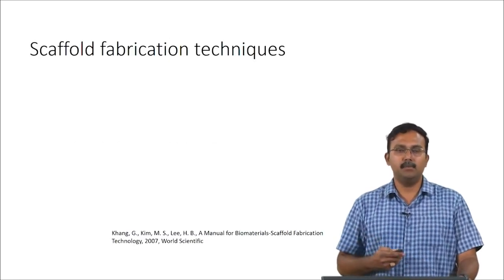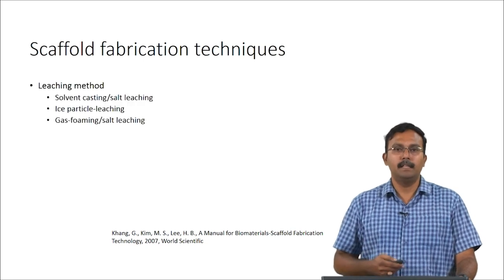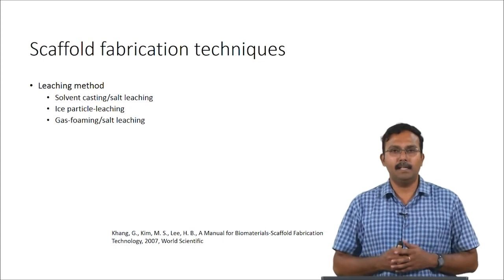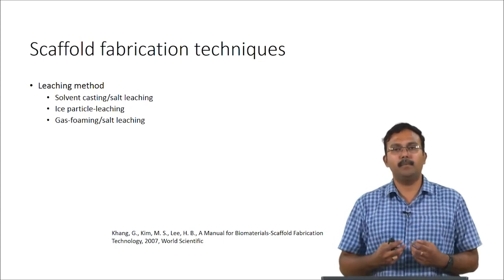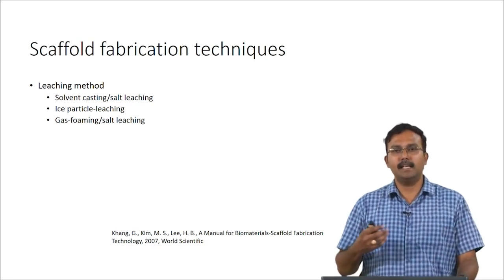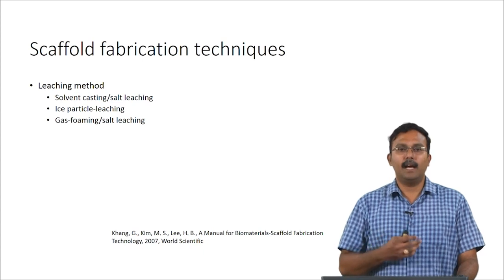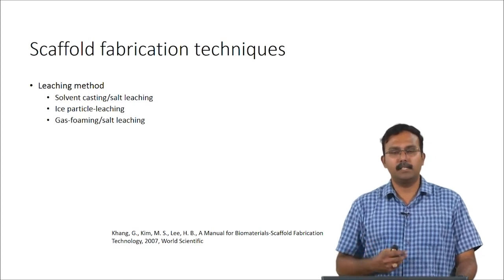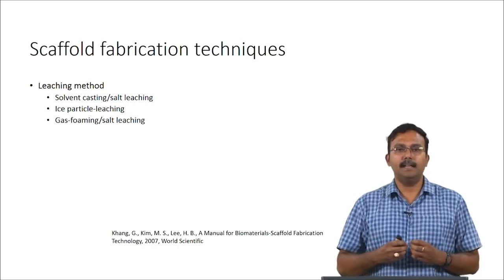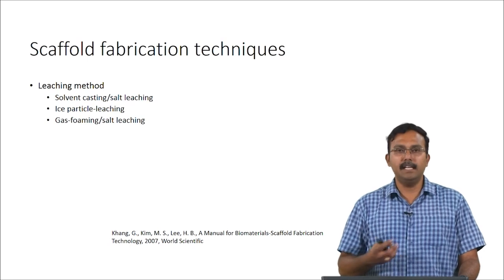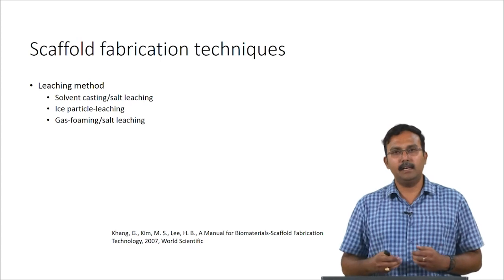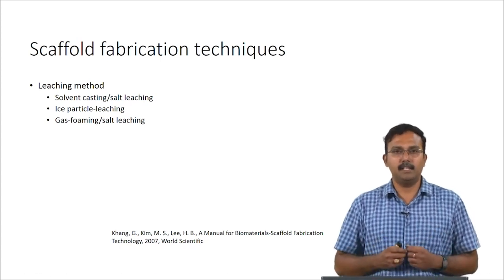These are some of the strategies which we will be talking about today. The first one is called the leaching method. This is a broad category within which there are multiple strategies. The three strategies commonly employed are solvent casting and salt leaching, ice particle leaching, gas foaming and salt leaching. A scaffold is prepared and gas, forming salt, is leached out to create a porous structure. We will see how it is done and how the scaffold would look like.